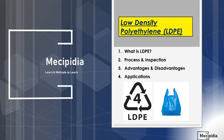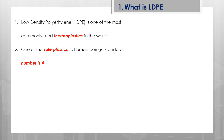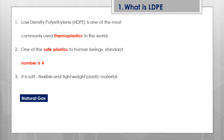What is LDPE? It is one of the most commonly used thermoplastics in the world and one of the safest plastics for human beings. Its standard resin identification number is 4. The basic qualities of LDPE are that it is very soft, flexible, and lightweight — these are the fundamental characteristics of LDPE.